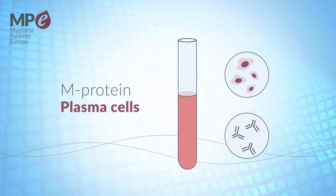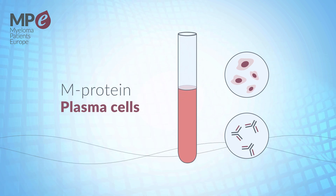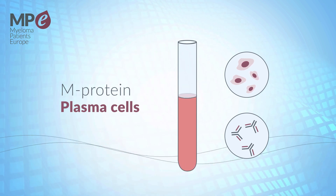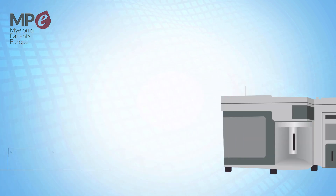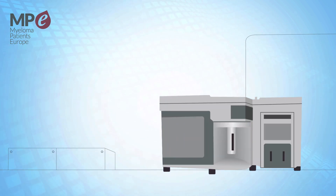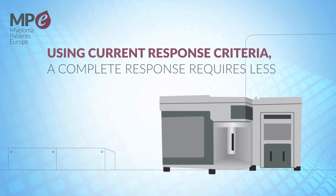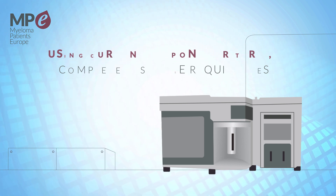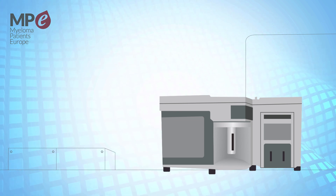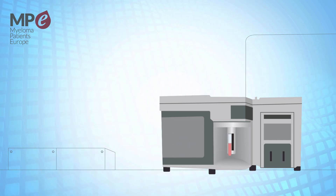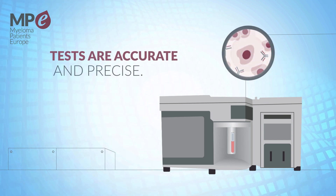In myeloma, treatment response is typically measured with tests examining the levels of M protein and/or free light chains in the serum and urine and the number of plasma cells in the bone marrow. Measurement can involve manually counting myeloma cells in a bone marrow sample under a microscope. Using current response criteria, a complete response requires less than 5% of myeloma cells in the bone marrow. MRD testing using flow cytometry or next generation sequencing is a lot more sensitive than the usual tests of treatment response.